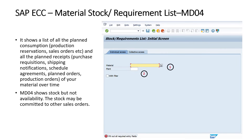The MD04 command shows a list of all the planned consumptions like reservations, sales orders, purchased acquisitions, shipping notifications, schedule agreements, and other types of reservations for your material.